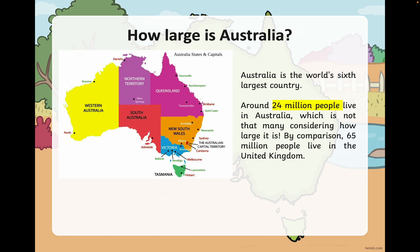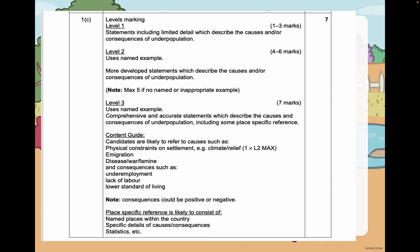That's quite a short lecture. Going back to the mark scheme, the key thing is making sure you include comprehensive and accurate statements. For place-specific references, you could mention the Great Victorian Desert when relating to climate and relief. You could also talk about where people actually live in Australia — along the east coast in cities such as Sydney and Brisbane. Those are the place-specific references you would use in this question.